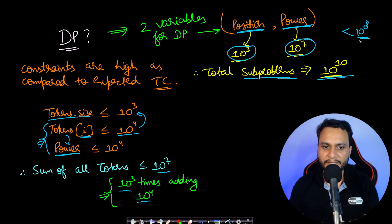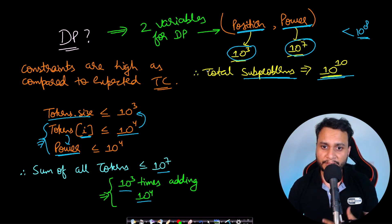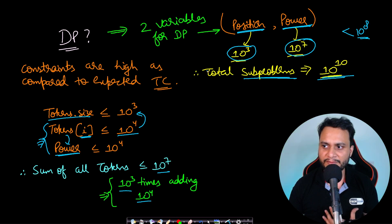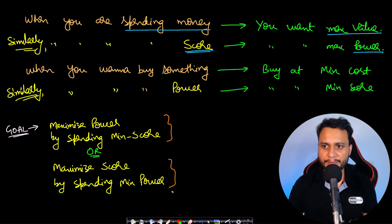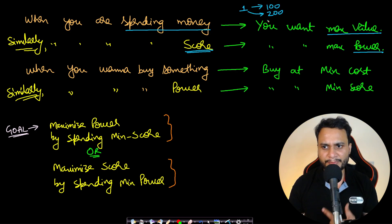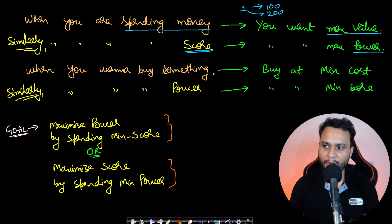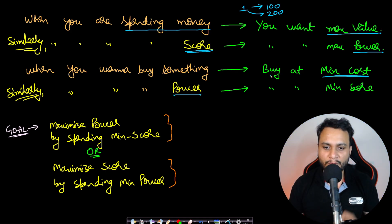Even before coding DP, the constraints reveal it won't be accepted. So we go for a greedy solution. The intuition: when spending money you want maximum value. If spending one score can give power of 100 or 200, you pick 200. Similarly, to gain score you want to spend minimum power. So the goal is to maximize score by spending minimum power.